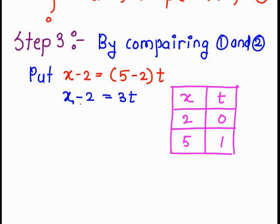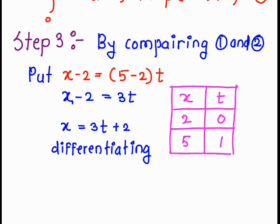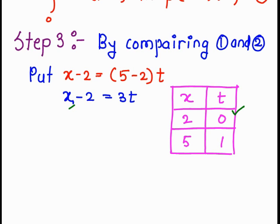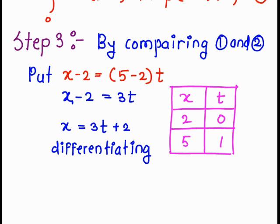When we substitute x equals 2: 2 minus 2 is 0, so 3t equals 0, giving t equals 0. When we substitute x equals 5: 5 minus 2 is 3, so 3 equals 3t, giving t equals 1. So we get the limit from 0 to 1, which is exactly our requirement.